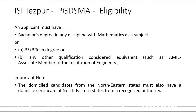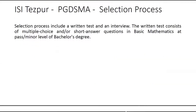What is the selection process? The selection process is the usual ISI selection process. You have to give a written test followed by an interview. The written test will have multiple choice questions and short answers, based completely on maths and statistics. You can refer to the ISI papers for MSE Statistics or MSE Economics, as they have relevant maths and statistics questions to practice.